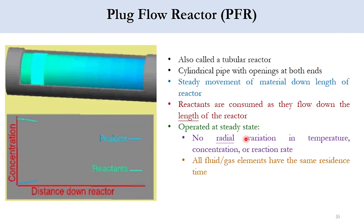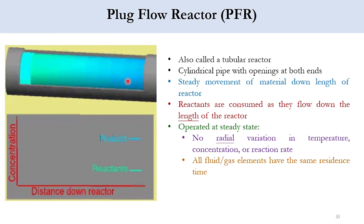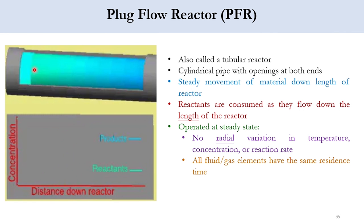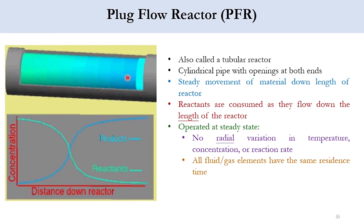Moving to the PFR, as you can see, the concentration of reactants is decreasing along the reactor while the concentration of products is increasing. Mixing takes place in the axial direction but there is no radial variation. We call it a tubular reactor — a cylindrical pipe with openings at both ends. It is steady state again, but spatially non-uniform, because the concentration and temperature profile differ at each point along the length.